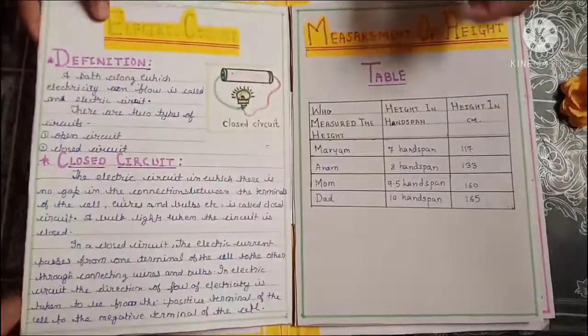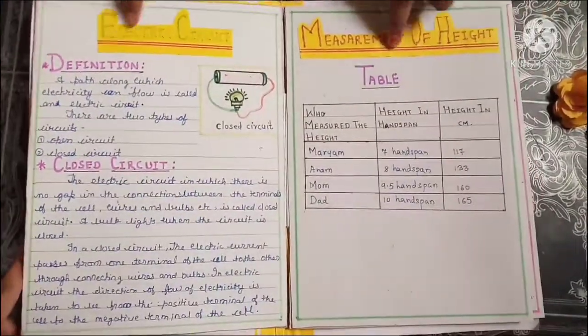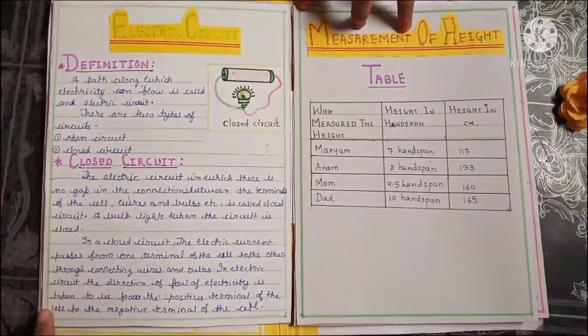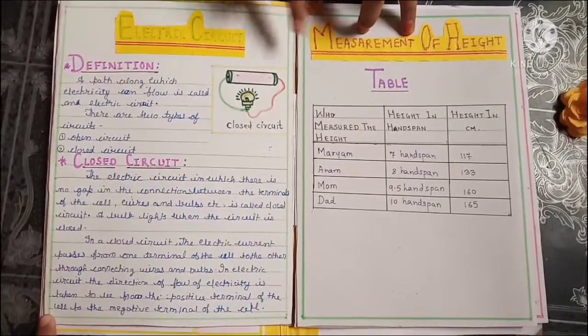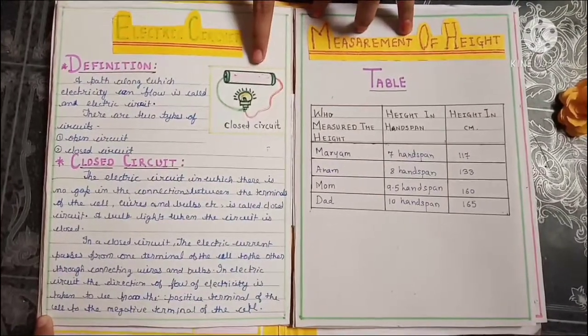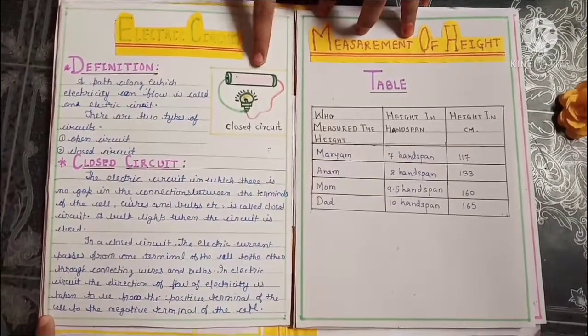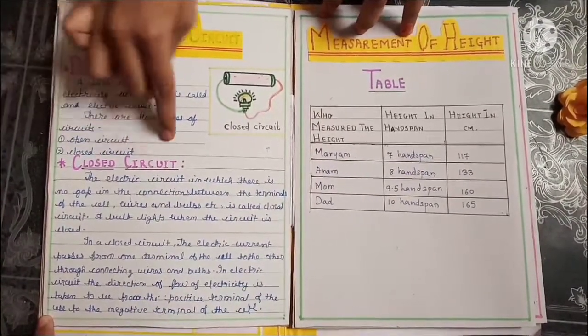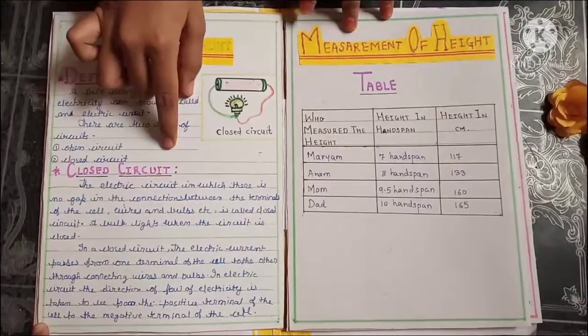The next is electric circuit. Here is the definition and here is the diagram of closed circuit. And here is the closed circuit.